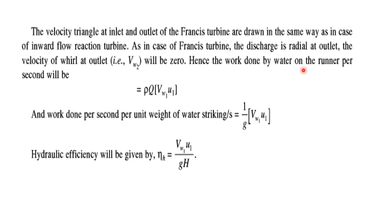Hence the work done by the water on the runner per second will be ρQ·Vw1·U1. And work done per second per unit weight of water striking per second will be 1/g times Vw1·U1. You will have to keep all these formulas in mind for numerics.